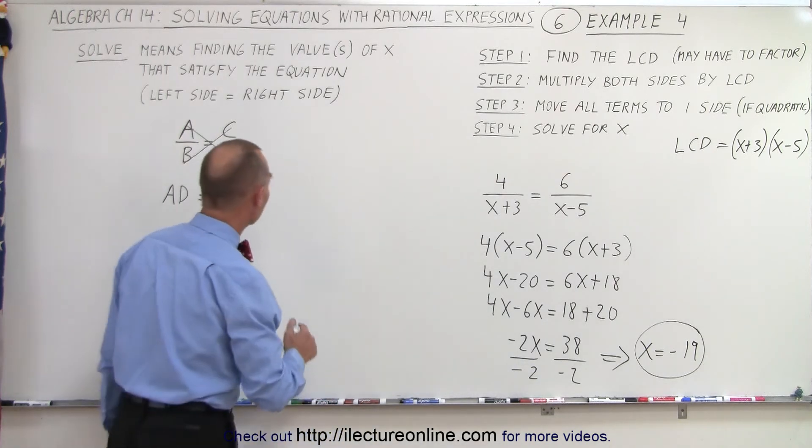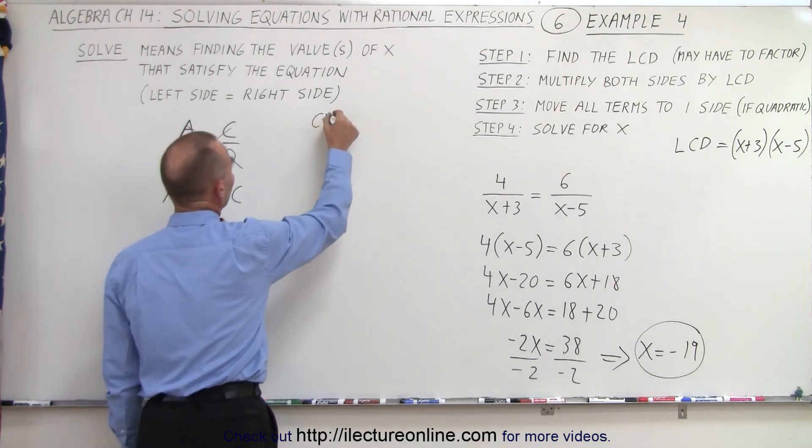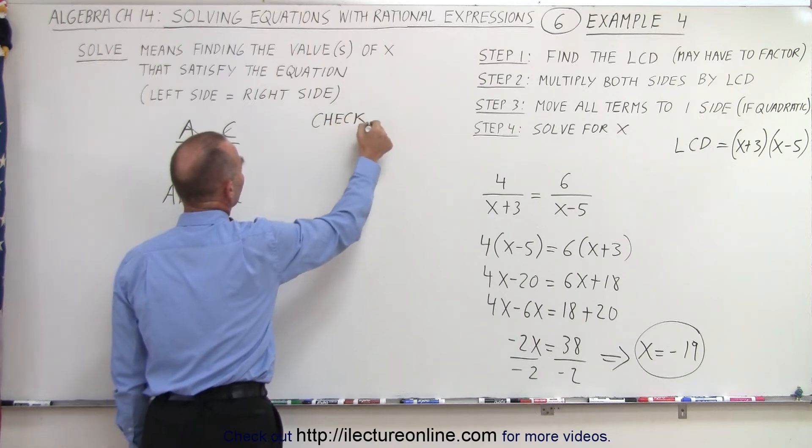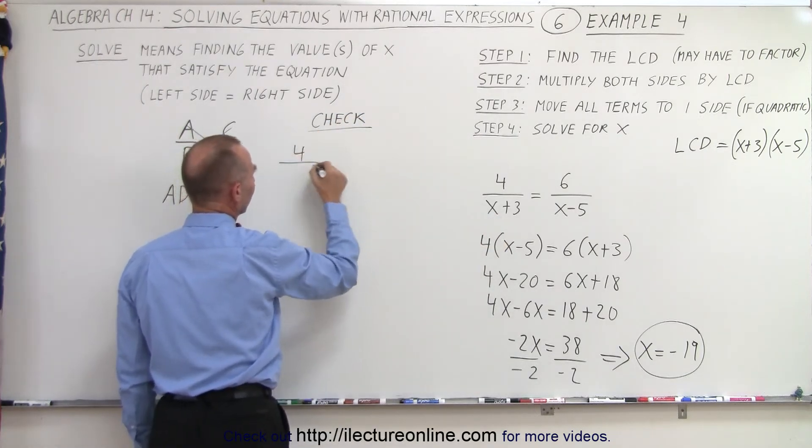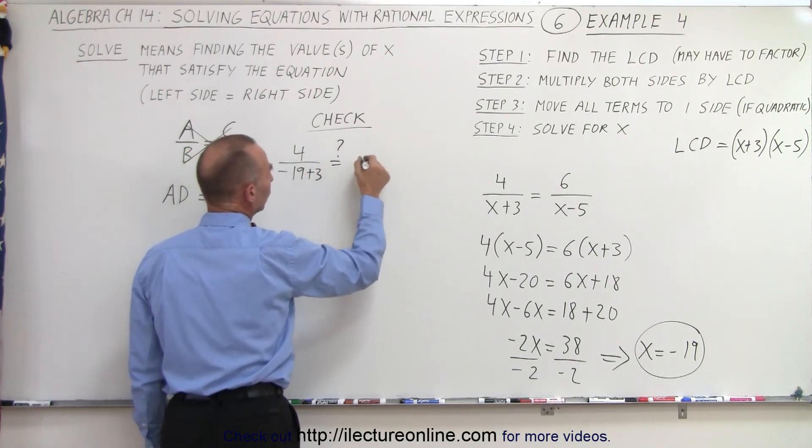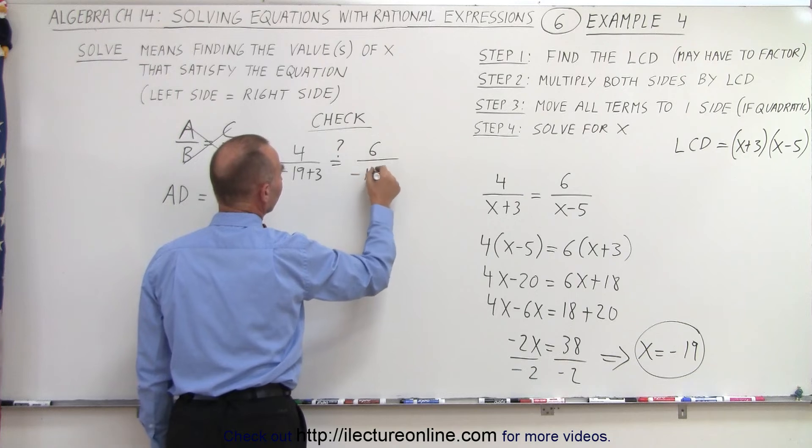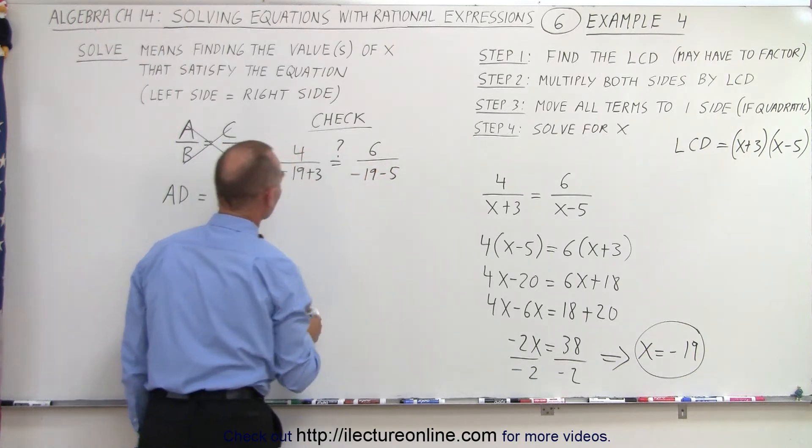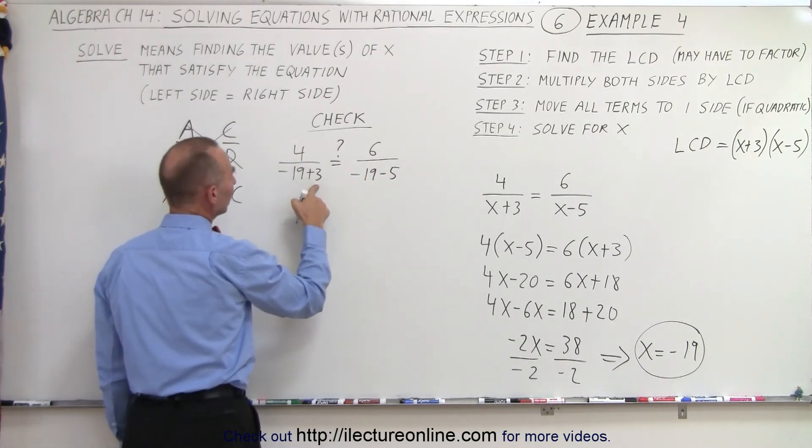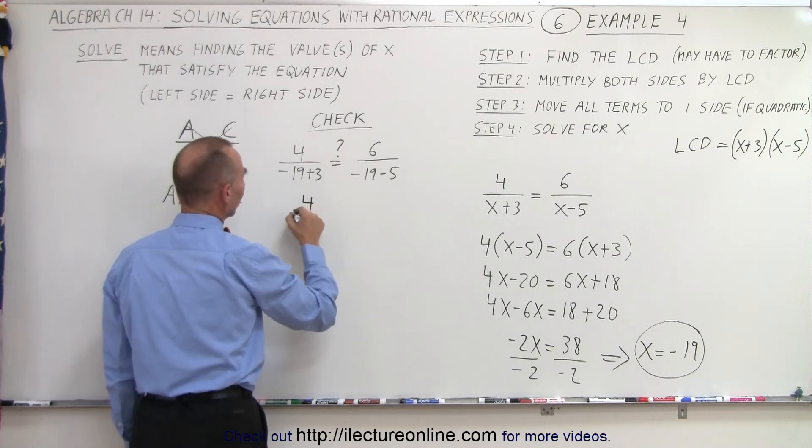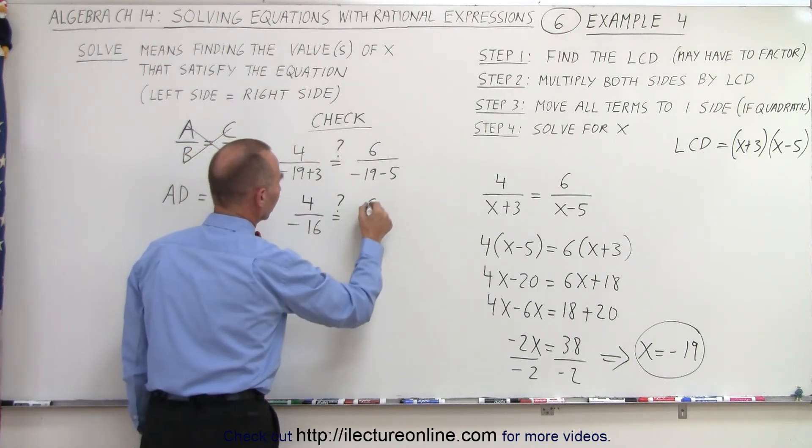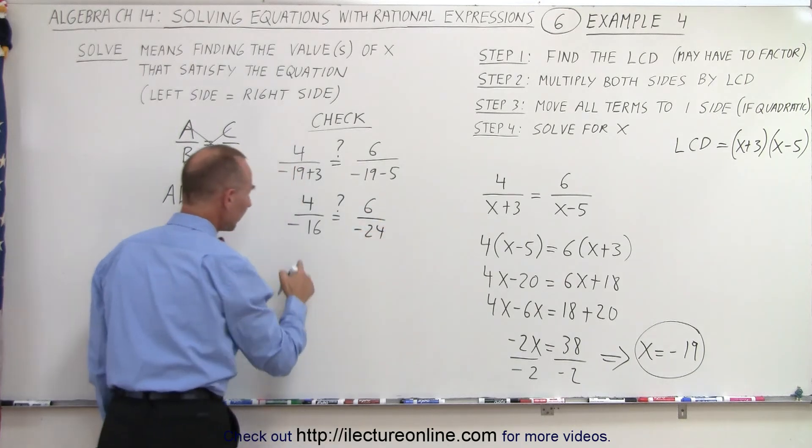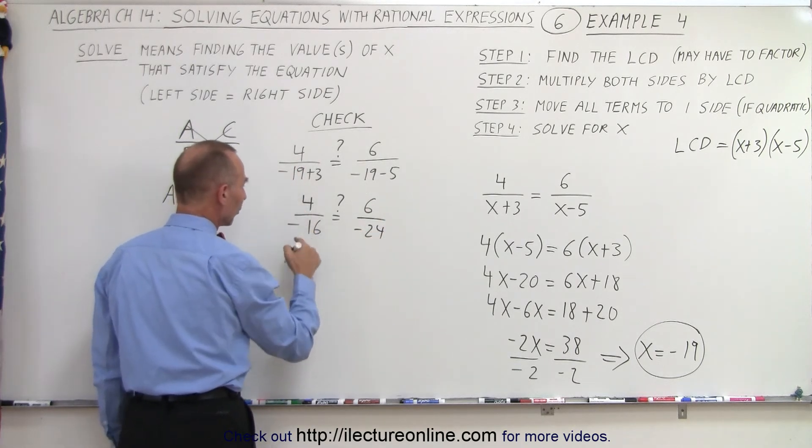But of course, we should check to see if it's correct. Let's do a check. We're going to plug that value into our original equation. So, 4 divided by (negative 19 plus 3). Is that equal to 6 divided by (negative 19 minus 5)? All right. Negative 19 plus 3 is negative 16. So, 4 divided by negative 16. Is that equal to 6 divided by negative 24? 4/16 is 1/4.